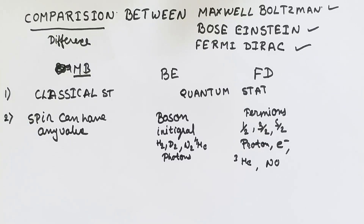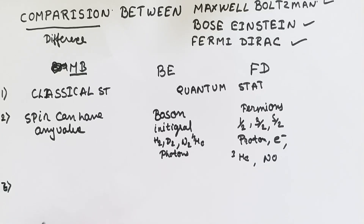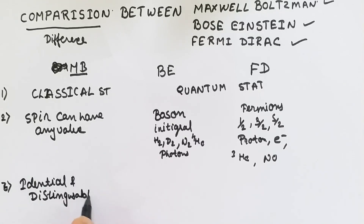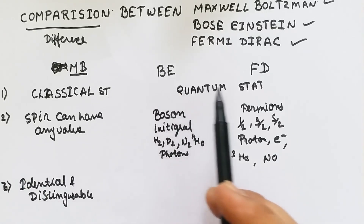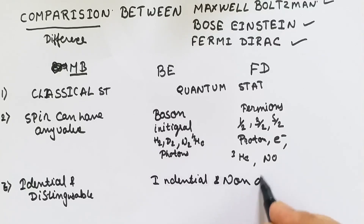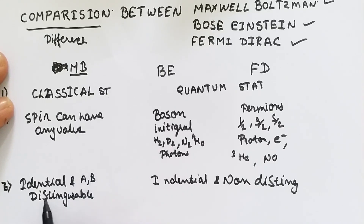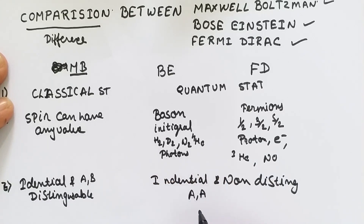The third point of comparison: in Maxwell-Boltzmann statistics, the particles are identical and they are distinguishable. In Bose-Einstein and Fermi-Dirac statistics, the particles are identical but not distinguishable. For example, two balls of different colors — particles A and B — are identical but distinguishable. If we take two particles both labeled A, they are identical as well as non-distinguishable.